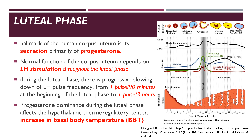The hallmark of the human corpus luteum is its secretion primarily of the steroid progesterone. Progesterone dominance in the luteal phase results in significant activation of the progesterone negative feedback loop on the GnRH pulse generator, which acts to decrease GnRH pulse frequency. During the luteal phase there is progressive slowing of the LH pulse frequency: from one pulse per 90 minutes in the late follicular phase, down to one pulse every three hours or even less towards the late luteal phase. Progesterone dominance also affects the hypothalamic thermoregulatory center, thereby increasing the basal body temperature during the second half of the menstrual cycle.